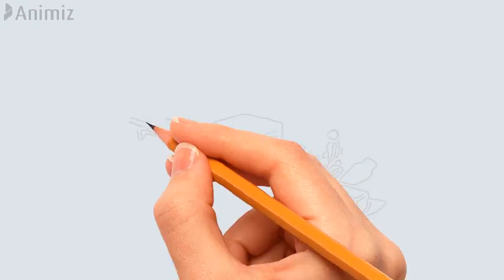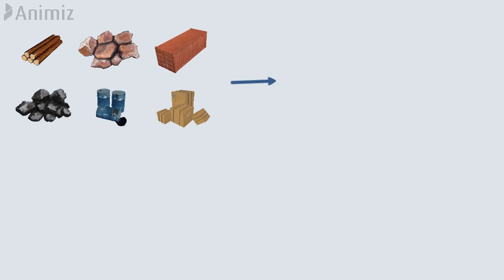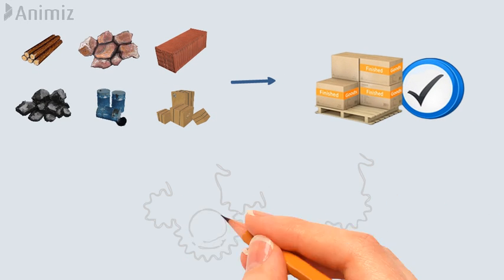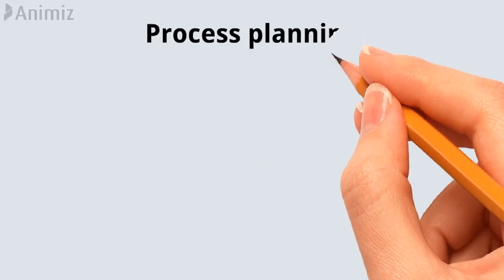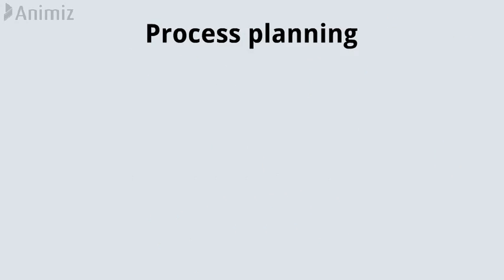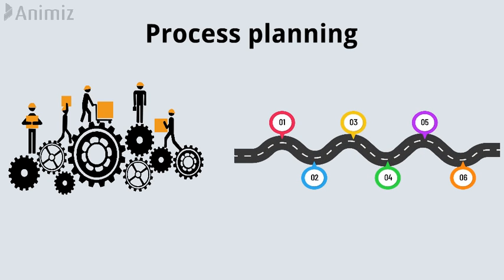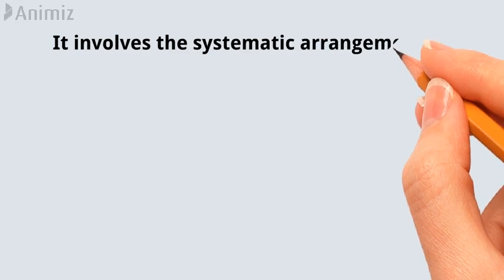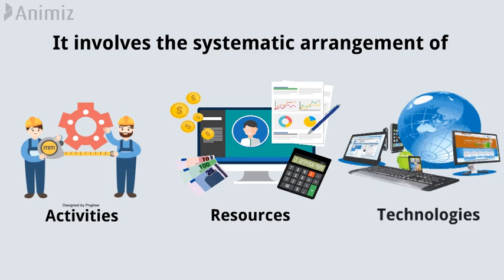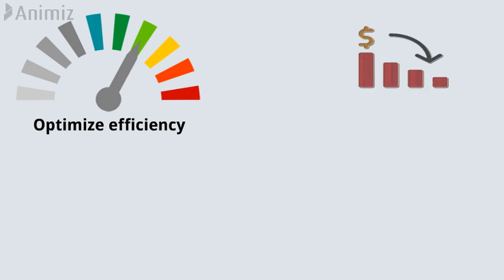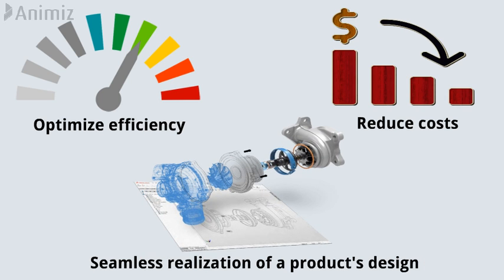In the complex world of manufacturing and production, transforming raw materials into finished products involves a complex series of steps and operations. Process planning, a critical aspect of manufacturing engineering, serves as the roadmap for this journey. It involves the systematic arrangement of activities, resources, and technologies to optimize efficiency, reduce costs, and ensure the seamless realization of a product's design.